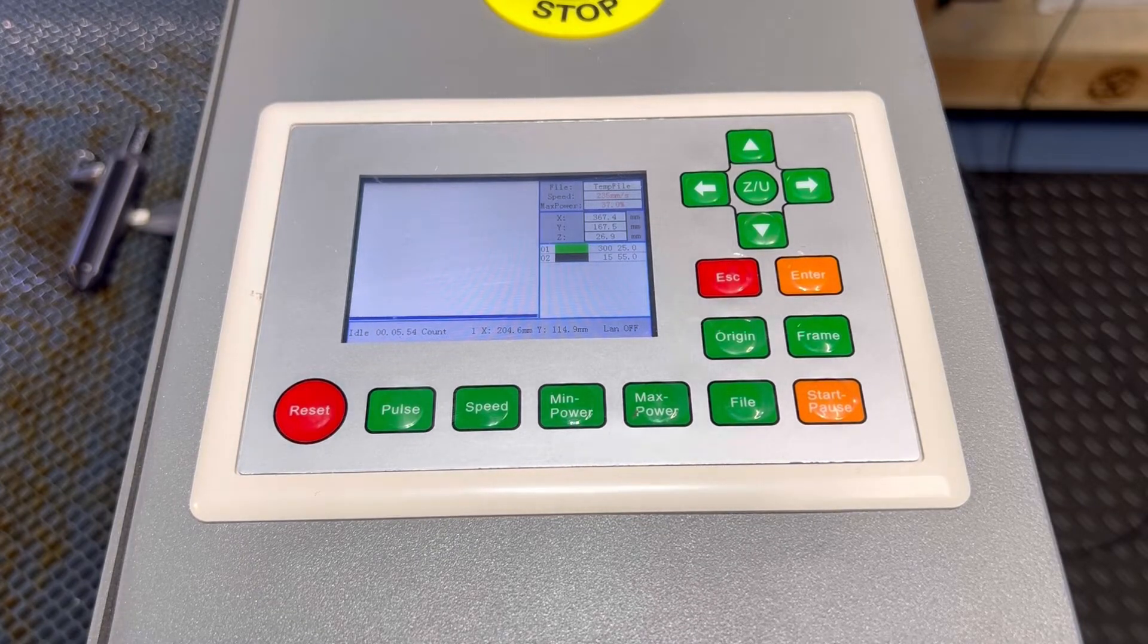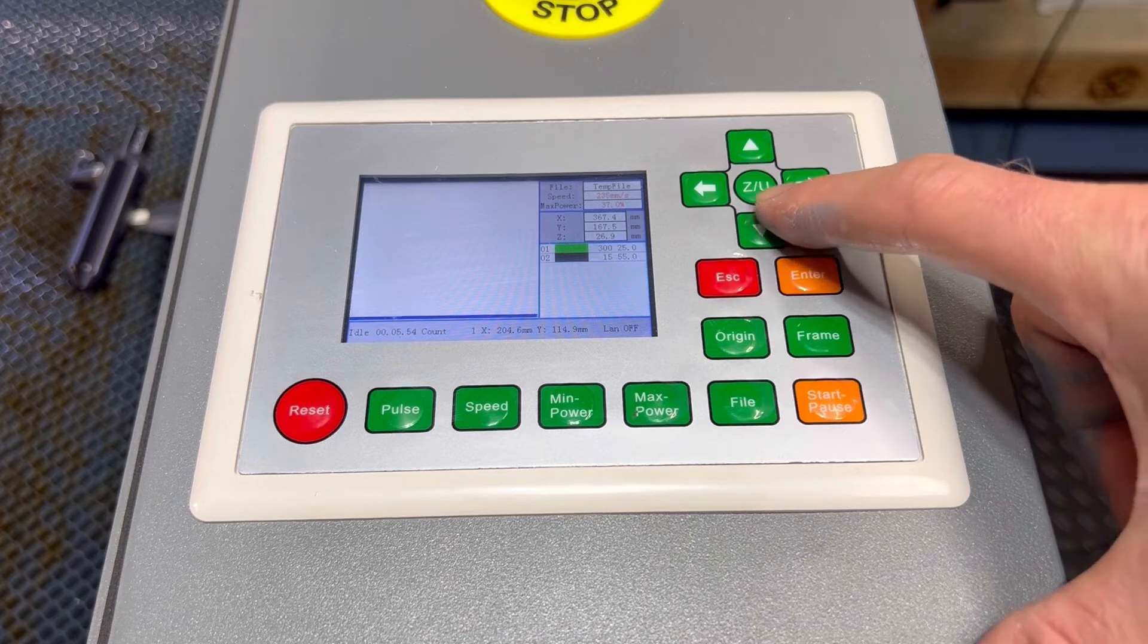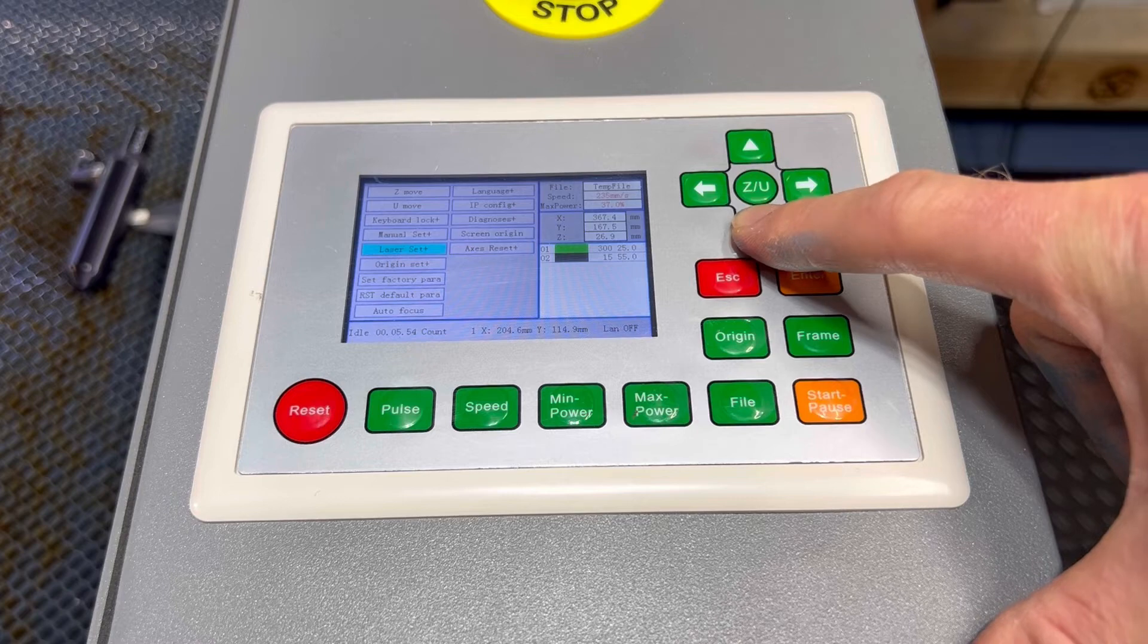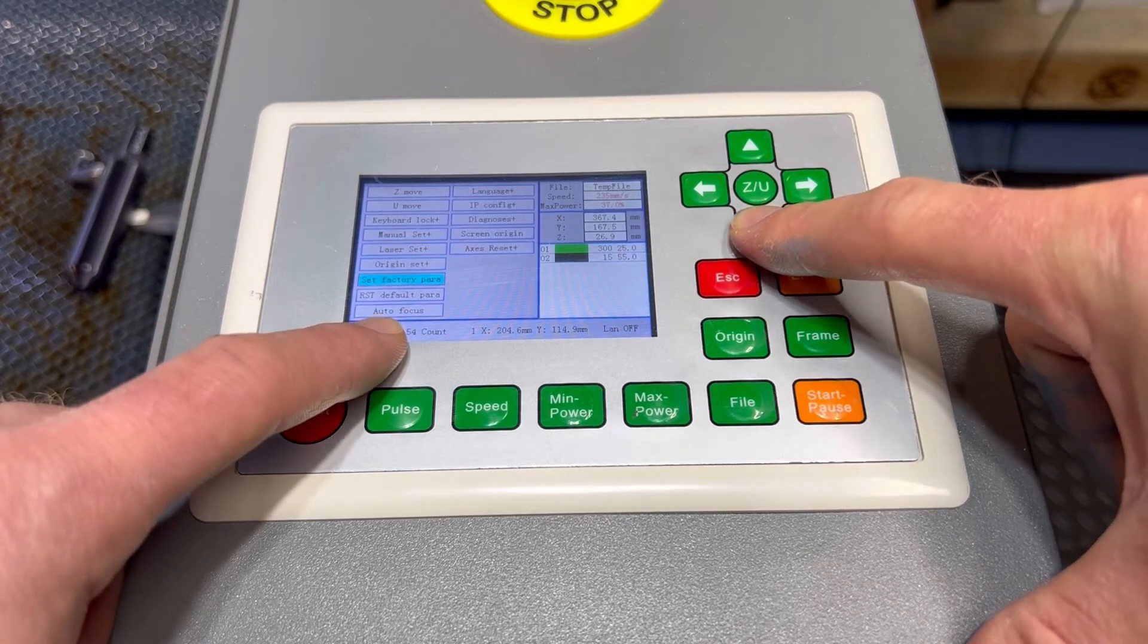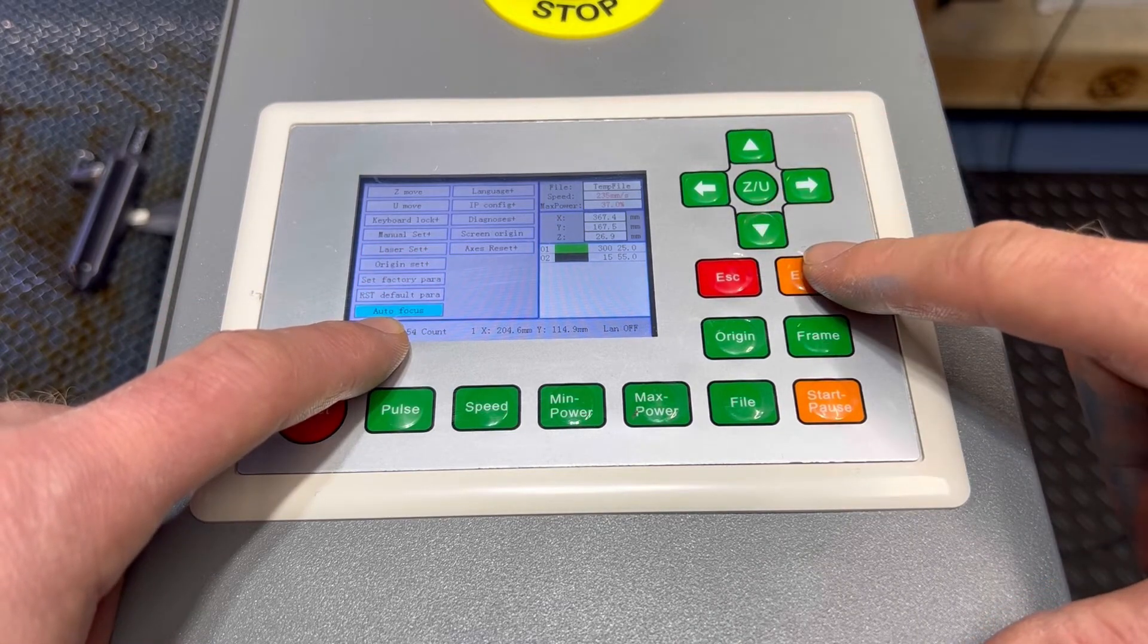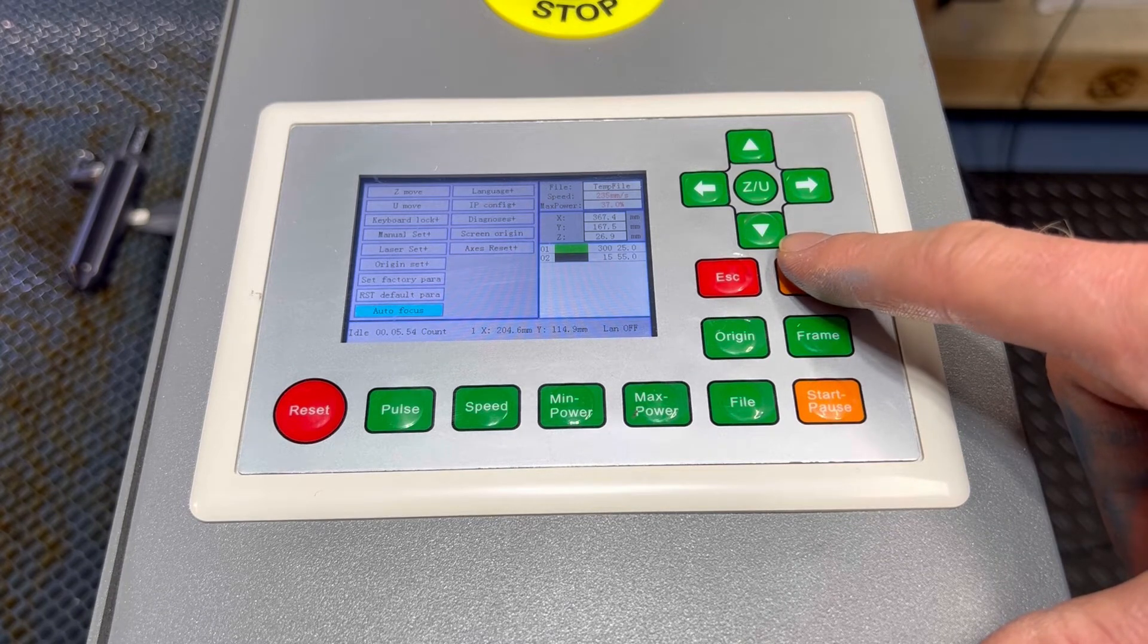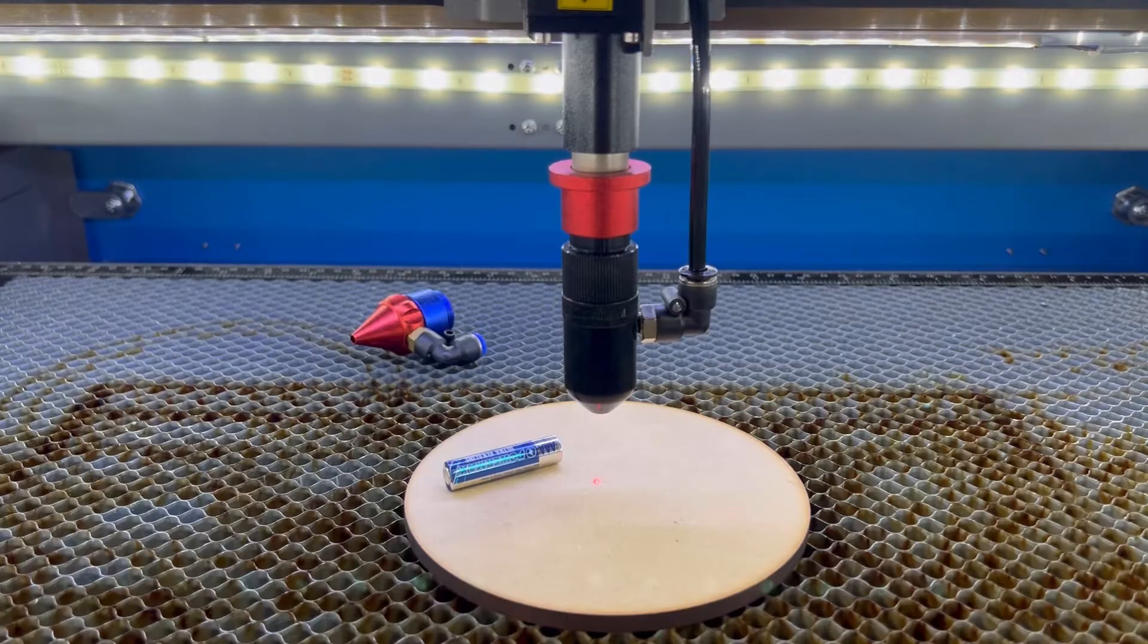So now that we've changed the settings in Lightburn, we can simply go to our menu. For me, it's the ZU button. I'm going to hit the directional key down until I see autofocus. And then once I press Enter, it's going to start the autofocus process. So we're going to hit Enter in 3, 2, 1.